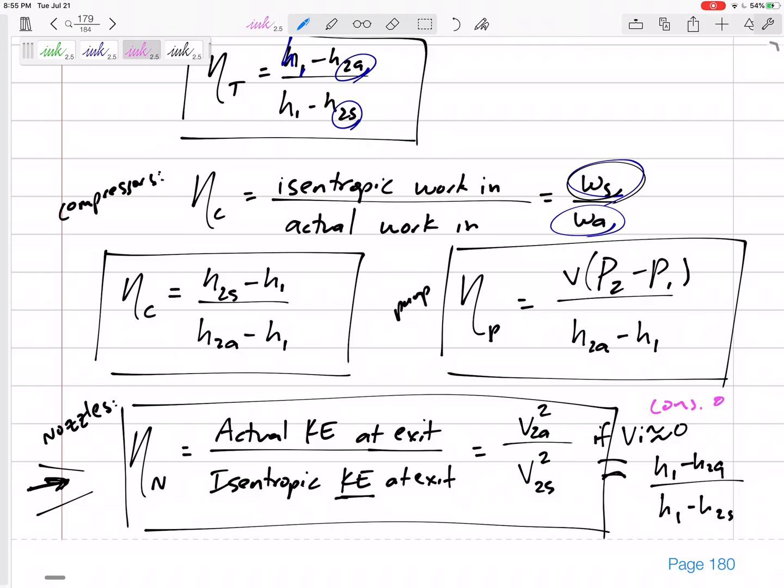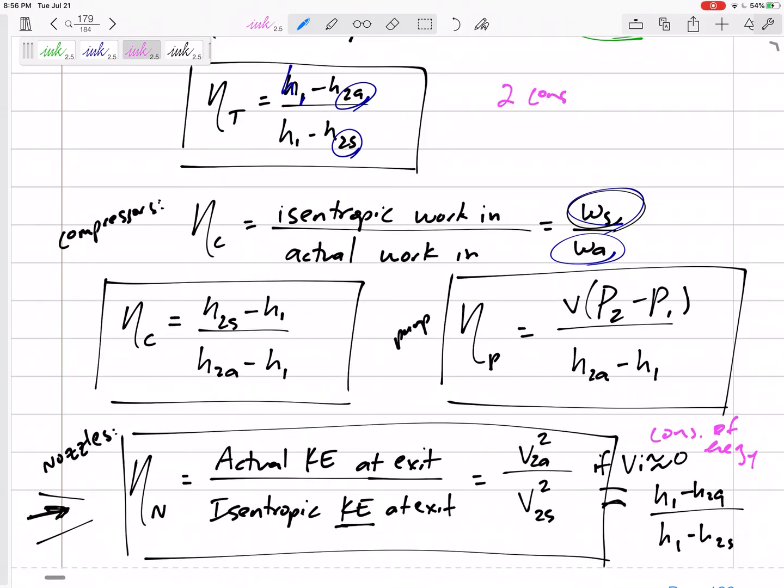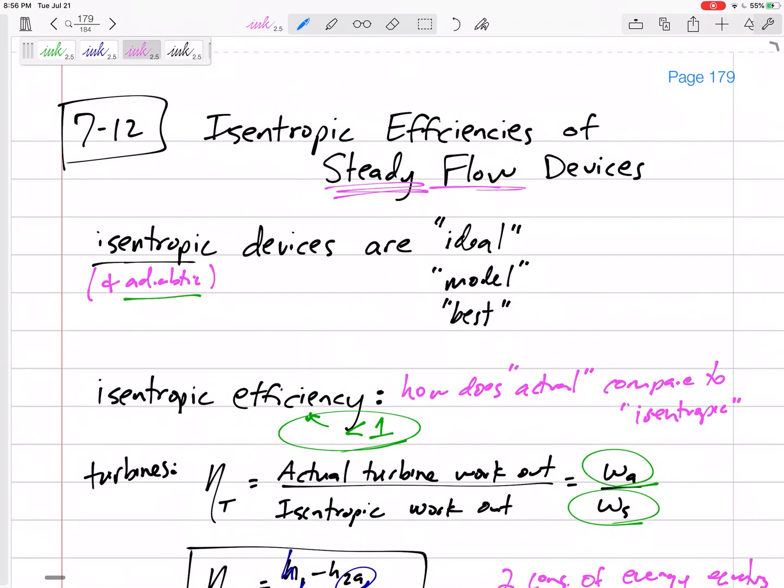Look at conservation of energy. Actually, for all these problems, sometimes we have two conservation of energy equations. The actual conservation of energy equation has work actual, kinetic energy actual, H actual—H2 actual—in that steady flow equation. But then we also have the conservation of energy if it was isentropic. So the work if it was isentropic, the H if it was isentropic, the velocity if it was isentropic. For these problems, don't forget about the conservation of energy equation. We've got to go back to chapter five and remember how to do steady flow devices, because now it's almost like we're doing two steady flow devices: the actual steady flow device and the isentropic steady flow device.